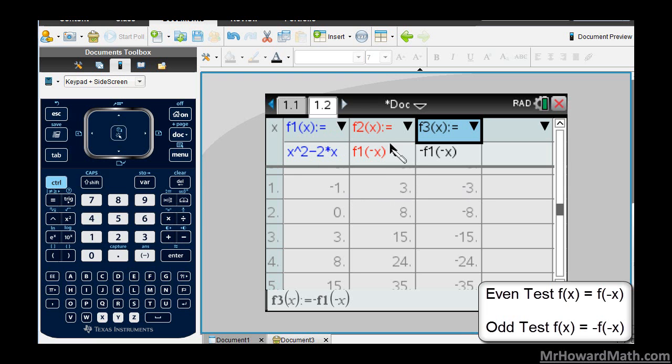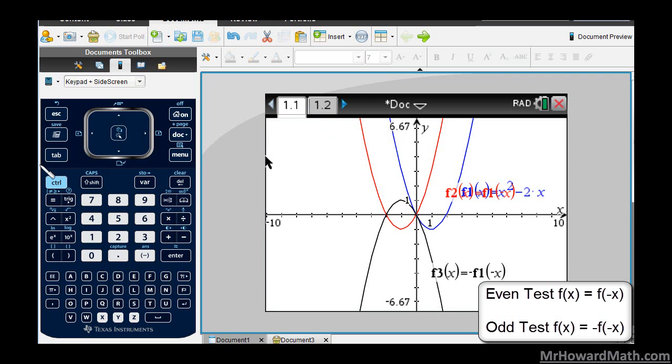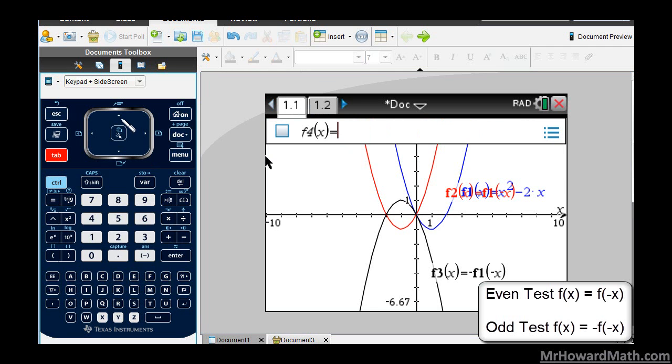It's quick and easy once you enter your even test in function 2, your odd test in function 3. We can test quickly. I can go back, hit the tab key, go up to my function 1, put in the next one that I want to check to see if I did it correctly.